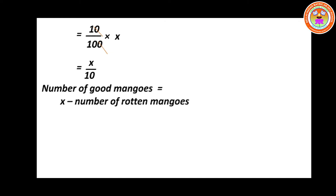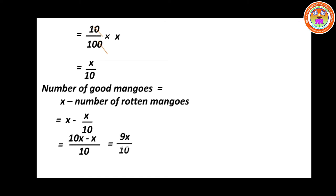Good mangoes equal x minus number of rotten mangoes. So x minus x divided by 10. Now multiply: 10 into x gives 10x, so 10x minus x divided by 10, giving 9x divided by 10. Mark that as equation number 1.